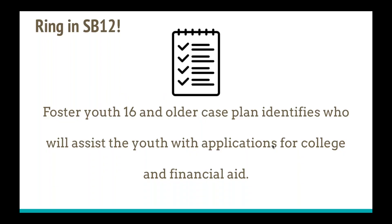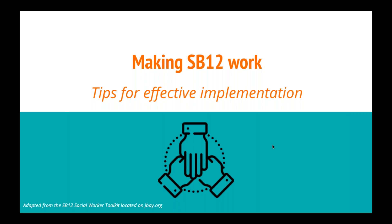This is really where SB12 comes in. SB12 requires that for any foster youth in the child welfare system at age 16 or older, a case plan must identify who is going to assist the youth with college applications and financial aid applications. This is critical so that youth know who to turn to, and child welfare workers or high school counselors know who is going to support the youth. Last year, we released an SB12 social worker toolkit with concrete step-by-step guidance on implementation, available at jbay.org.